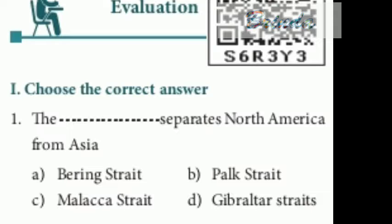Now we will go to the evaluation part. First, choose the correct answer. The dash separates North America from Asia. The options are Bering Strait, Park Strait, Malacca Strait, Gibraltar Strait. The answer is Bering Strait — this separates Asia and North America. Second question: dash is known as the sugar bowl of the world. Options are Mexico, USA, Canada, Cuba. The answer is Cuba.